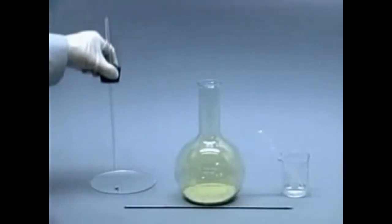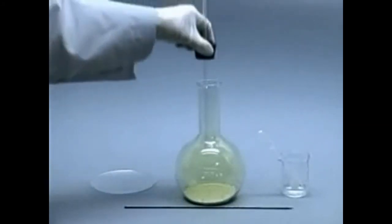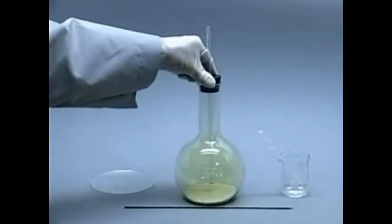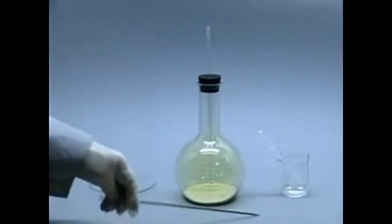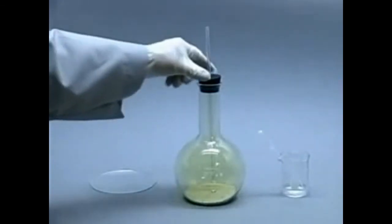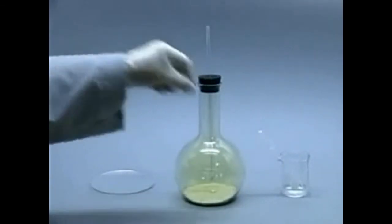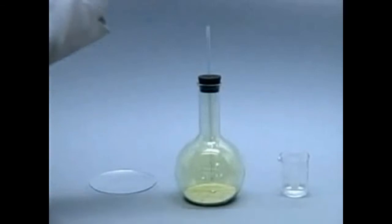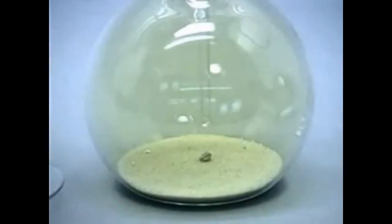A small piece of sodium metal is placed in a flask containing yellow chlorine gas. The flask also contains sand to prevent the heat which will be generated by the reaction from cracking the glass. Initially, no reaction is observed between the sodium and the chlorine. The reaction will be initiated by adding a drop of water to the sodium.